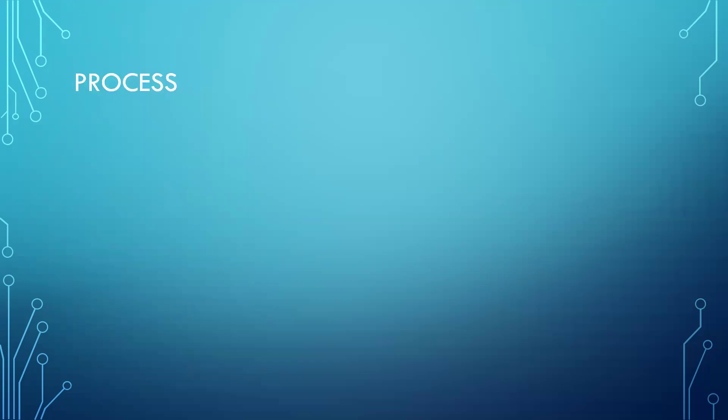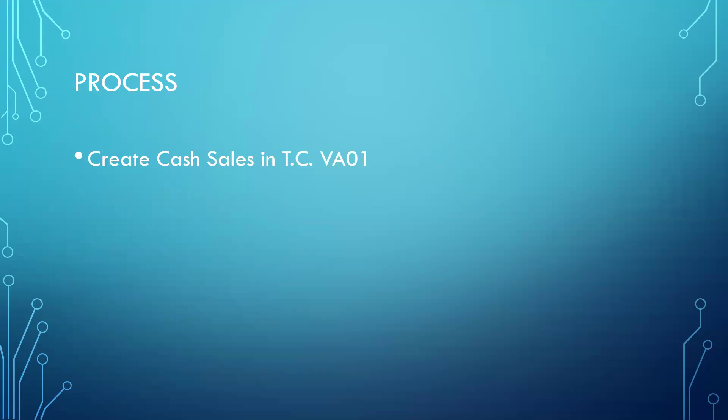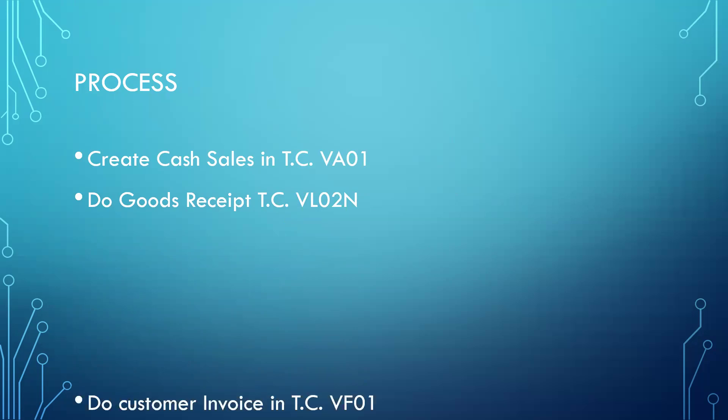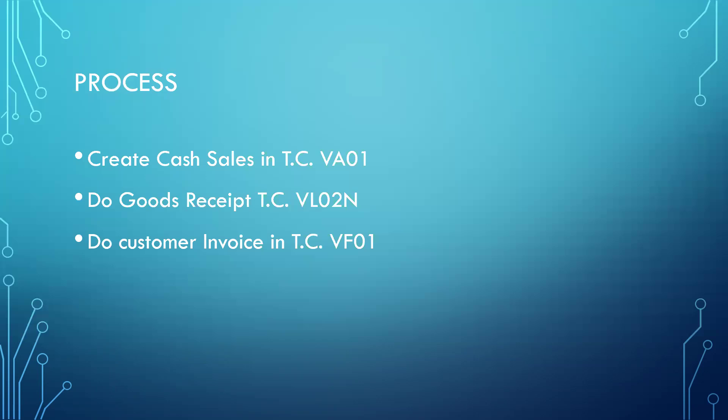They may ask you what is the process. First, you create a cash sale in VA01, and then you do goods issue. Once you create the cash sale, delivery will be created automatically. Upon creation of the delivery, you go to VL02N and do the post goods issue. Then to create the customer invoice, you go to VF01.